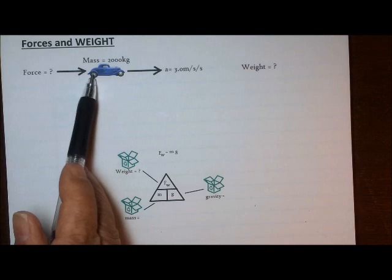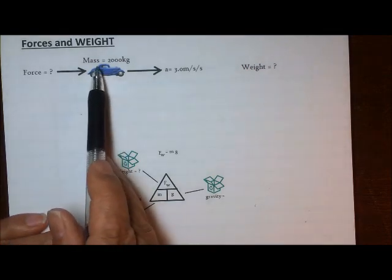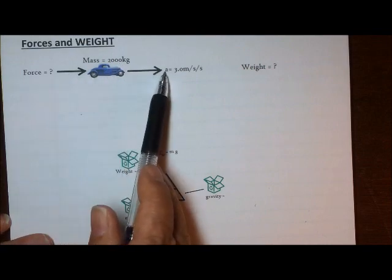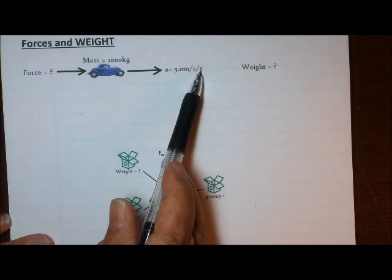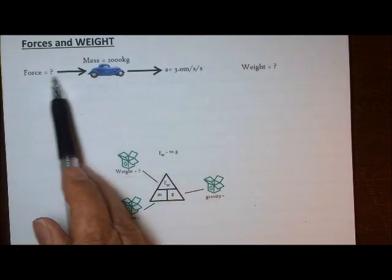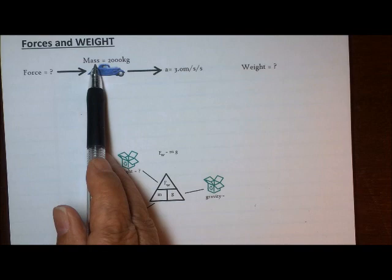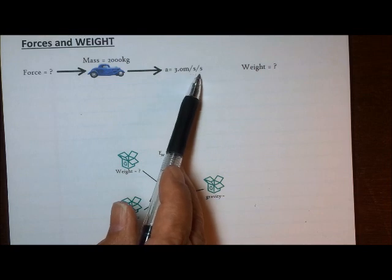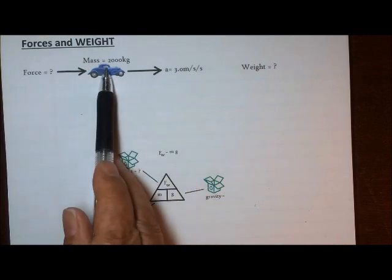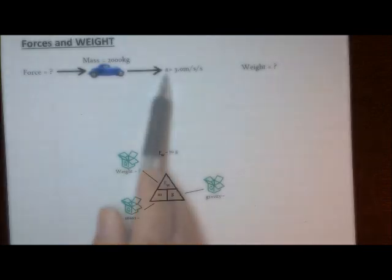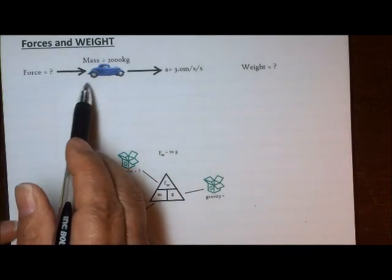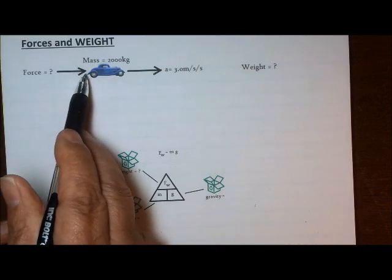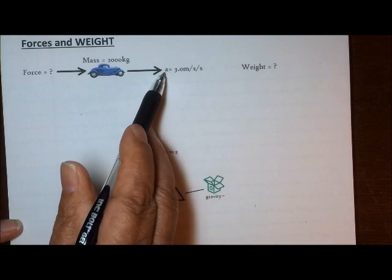Let's take this car right here. We know that it has a mass of 2,000 kilograms and there is an acceleration of 3 meters per second squared. So you have some unknown force pushing on the car. The car is accelerating at 3.0 meters per second squared, meaning the car is going to speed up. Let's use Newton's second law to calculate the force accelerating it forward.